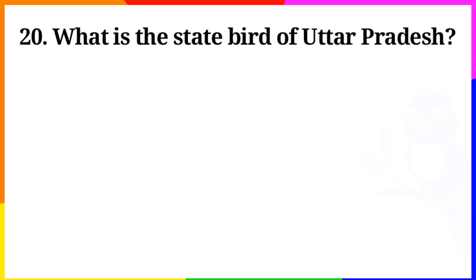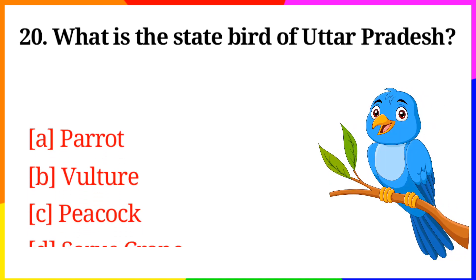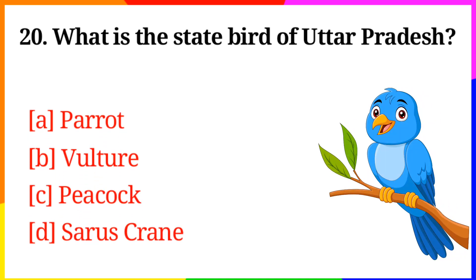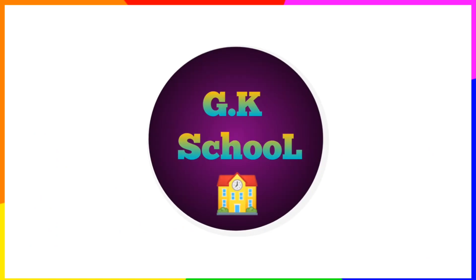Question No. 20: What is the state bird of Uttar Pradesh? Option A: Parrot, B: Vulture, C: Peacock, D: Sarus Crane. Answer is Option D: Sarus Crane.